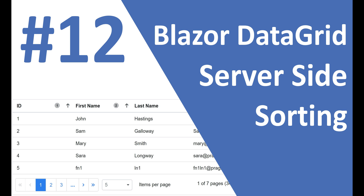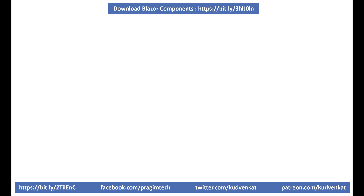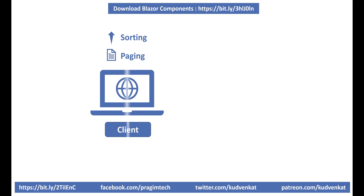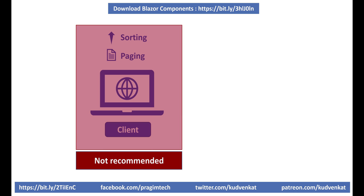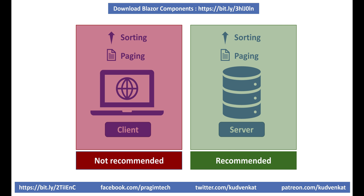Hey guys, I am Venkat and this is part 12 of the web development with Blazor video series. If your application deals with huge volumes of data, performing operations like sorting and paging on the client side is not a recommended approach. Trying to load the entire dataset onto the client machine in one go may explode both the browser memory and rendering engine. The recommended approach is to perform sorting and paging on the database server — this is the approach we typically use in real-world web applications. In this video, let's discuss implementing both sorting and paging on the database server.